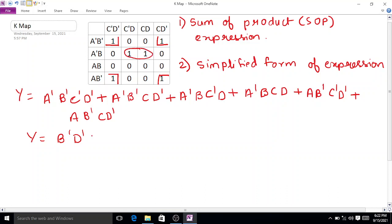Here we get the expression as A'BD. So this is our simplified form of Boolean expression for the given K-map. Thank you.